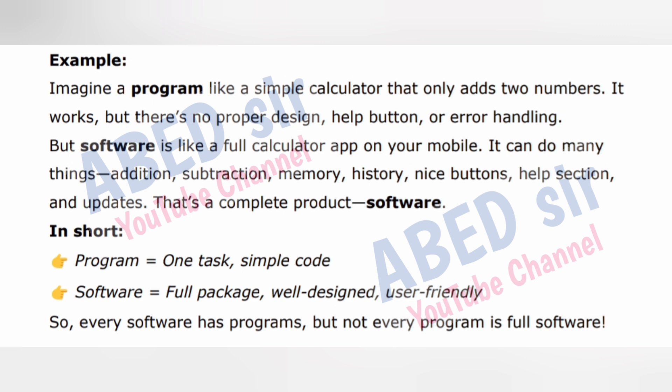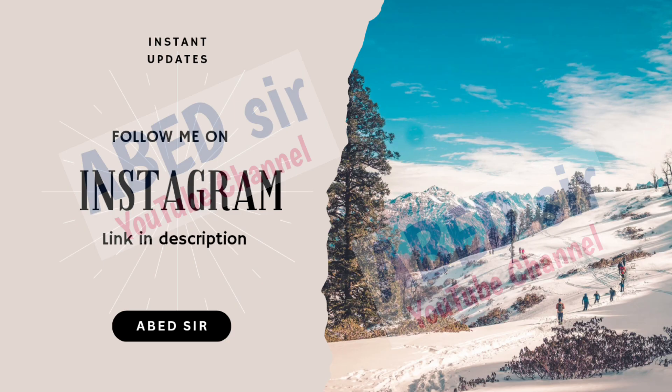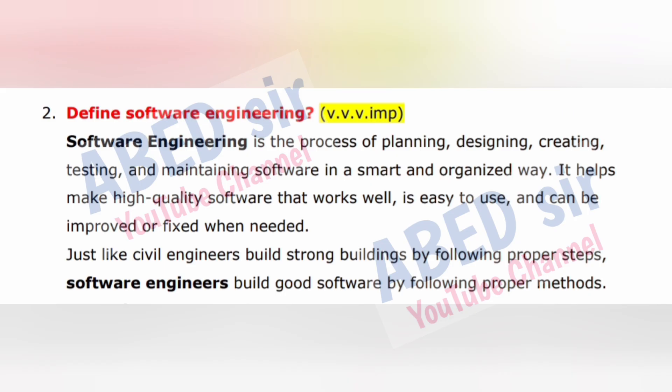In short, a program equals one task, simple code. Software equals a full package, well-designed and user-friendly. So every software has programs, but not every program is full software.